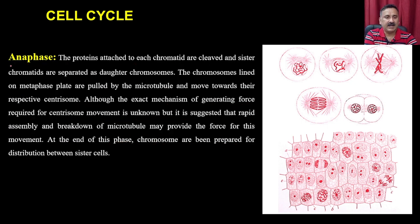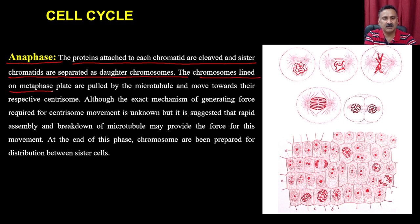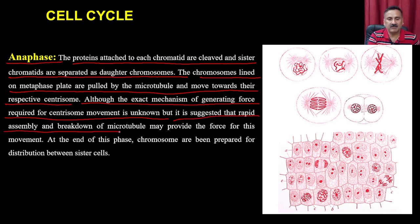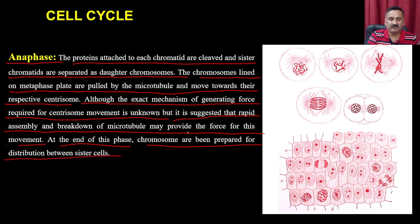In anaphase, the proteins attached to each chromatid are cleaved and the sister chromatids are separated as daughter chromosomes. The chromosomes linked on the metaphase plate are pulled by microtubules and move towards their respective centrosomes. At the end of anaphase, chromosomes are prepared for distribution between the two daughter cells.